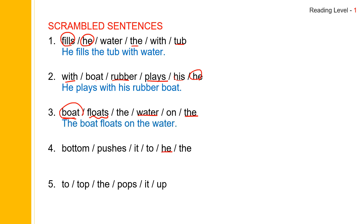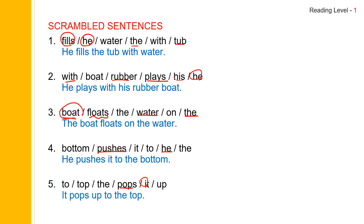And then he is the subject. Pushes is the verb. He pushes what? He pushes it to the bottom. And the last one: it is the subject and pops is the verb. It pops up to the top. Let me read the sentences for you. He fills the tub with water. He plays with his rubber boat. The boat floats on the water. He pushes it to the bottom. It pops up to the top.